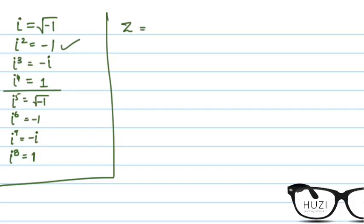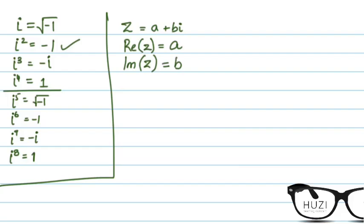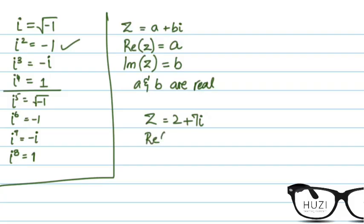A complex number, denoted by z, is simply a combination of a real number and an imaginary number. The real part is a, and the imaginary part is b — and importantly, both a and b are real numbers. For example, if z = 2 + 7i, the real part of z is 2 and the imaginary part is 7.